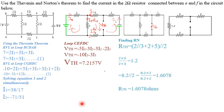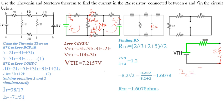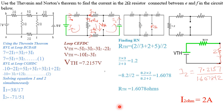After calculating RTH = 1.67 ohms, we draw our Thevenin's equivalent circuit and replace the 2-ohm resistor that was taken out. The current through the 2-ohm resistor is: I(2Ω) = VTH / (RTH + 2) = 7.2157 / (1.6078 + 2). Computing this gives us the current through the 2-ohm resistor using Thevenin's theorem.